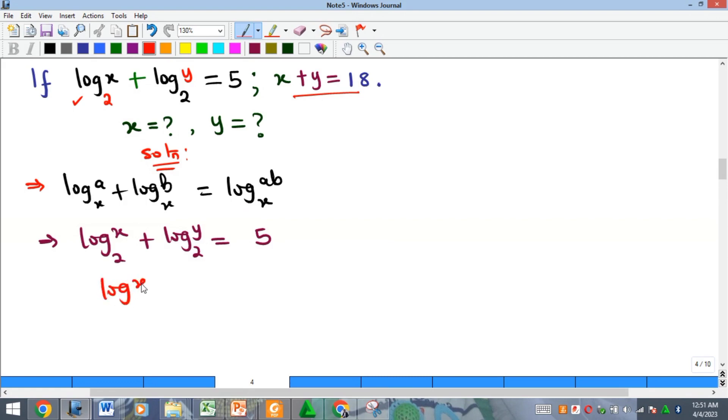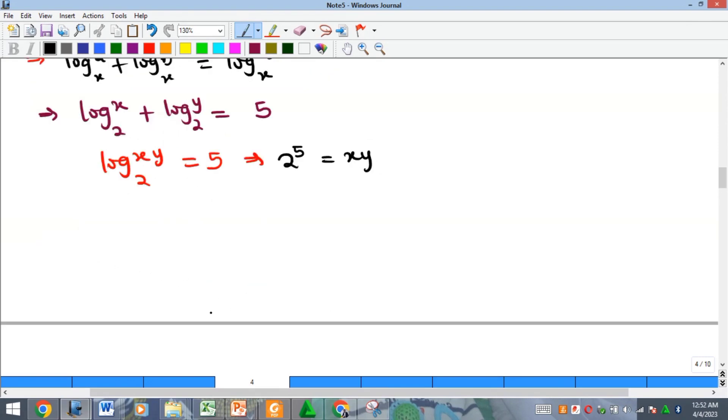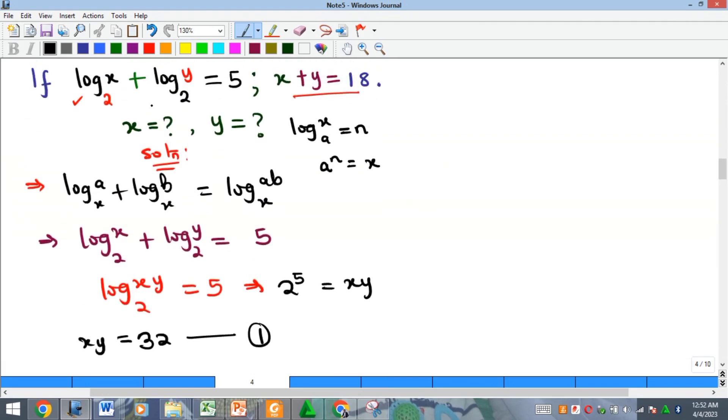Remember it's equal to 5, so we can write this as log xy base 2 equals 5. By the definition of logarithm, if you have log x base a equal to n, then a raised to the power of n is equal to x. That means our 2 raised to the power of 5 is equal to xy. Therefore, xy equals 2 to the power of 5, which is 32. So this is now my equation 1.